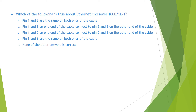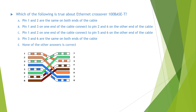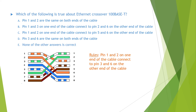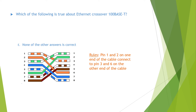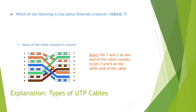To answer this question, we need to remember the cable pin-out for Ethernet crossover 100BASE-T. The rule is: pin 1 and 2 on one end of the cable connect to pin 3 and 6 on the other end of the cable. So for this question, none of the other answers is correct. You can find the detailed explanation in the video on types of UTP cables.